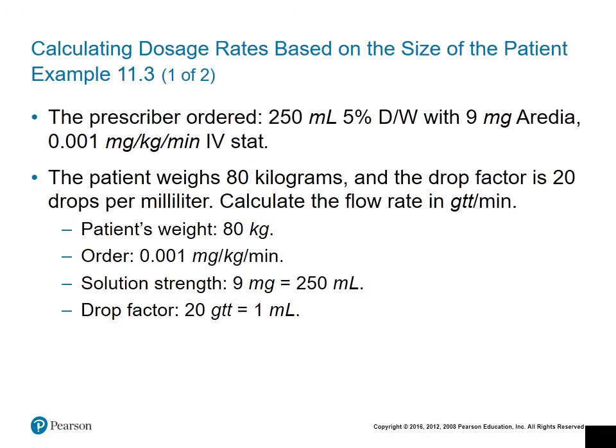For this example, the prescriber ordered 250 milliliters of 5% dextrose with nine milligrams of Ardia at one one-thousandth milligram per kilogram per minute IV stat. The patient weighs 80 kilograms and the drop factor is 20 drops per milliliter. We want to calculate the flow rate in drops per minute. The solution strength is nine milligrams per 250 milliliters, and the drop factor is 20 drops per milliliter.